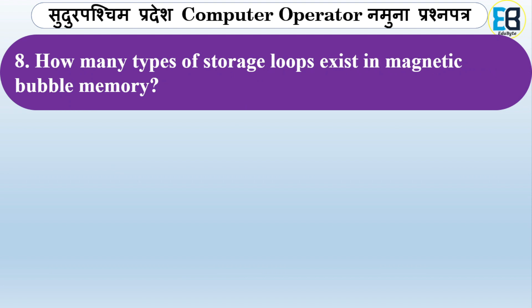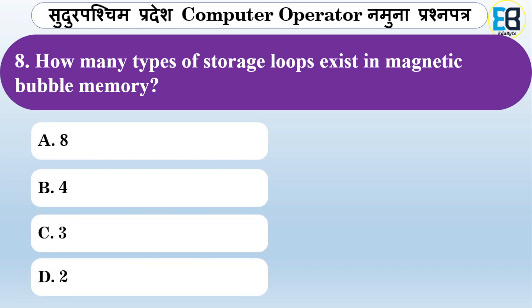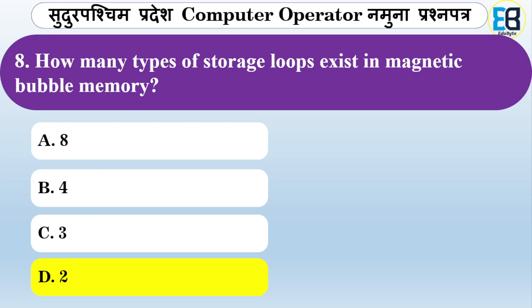How many types of storage loops exist in magnetic bubble memory? Options are eight, four, three, or two. The correct answer is two — there are two types of loops in magnetic bubble memory.